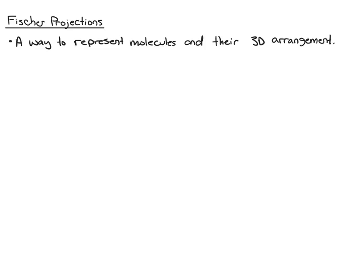The final thing we're going to work with in stereochemistry are Fischer projections. Fischer projections are just a different way to represent molecules and the 3D arrangements without using the dash and wedge notation that we're so used to. So let's take a look at a pair of enantiomers, and we're going to convert these to Fischer projections.